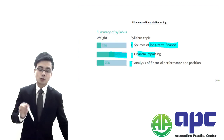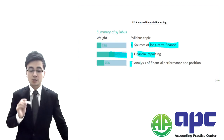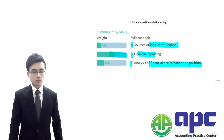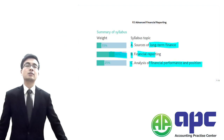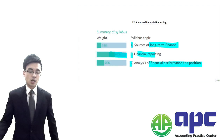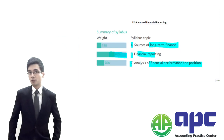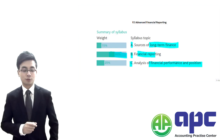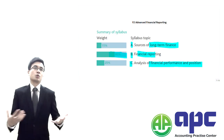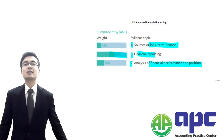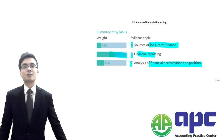Section C of the syllabus is mainly focusing on ratio analysis. It requires you to calculate profitability, gearing, liquidity, and other ratios to measure the performance of the company. That is not a difficult task — all we need to do is remember the pro forma and apply it to any cases the examiner gives us.